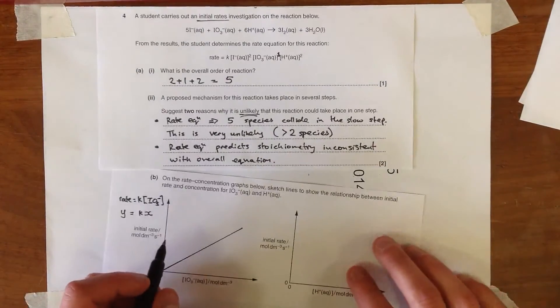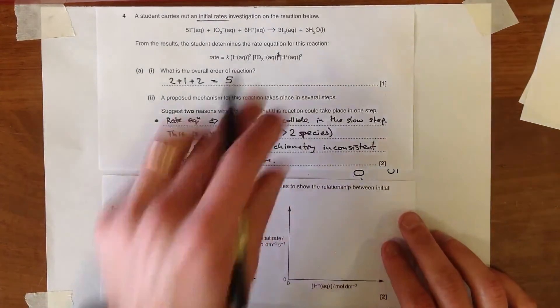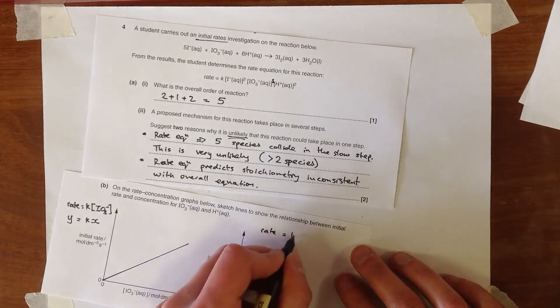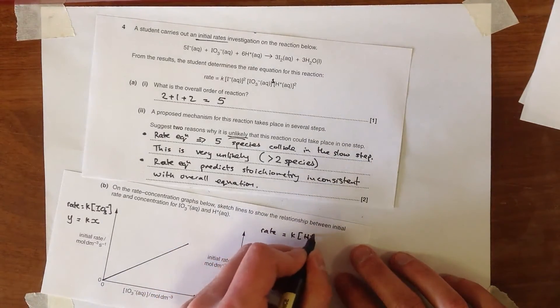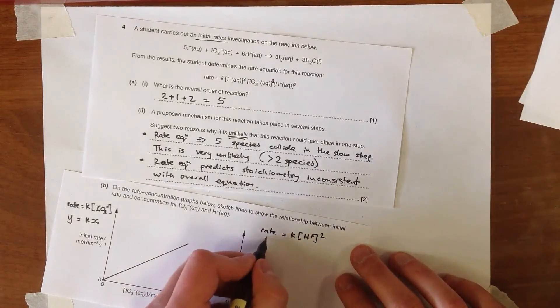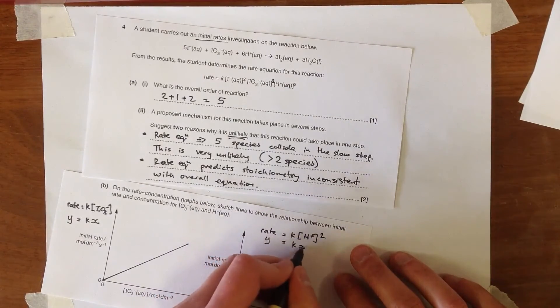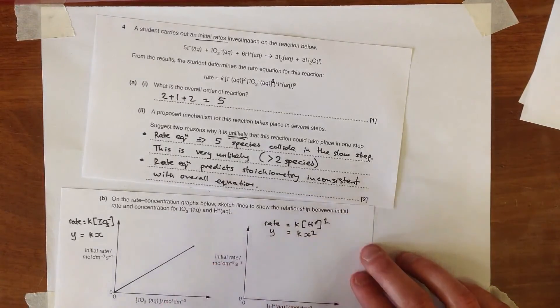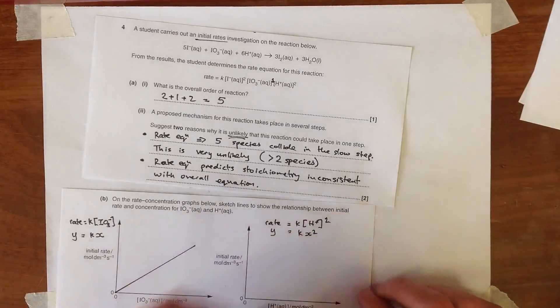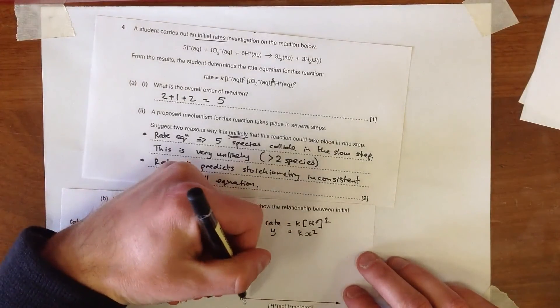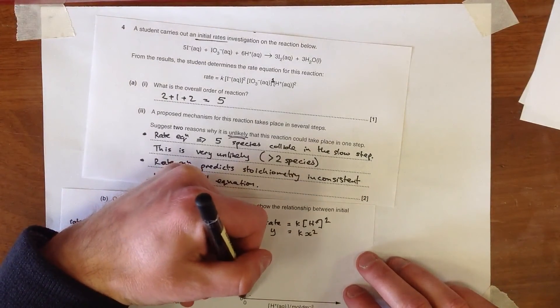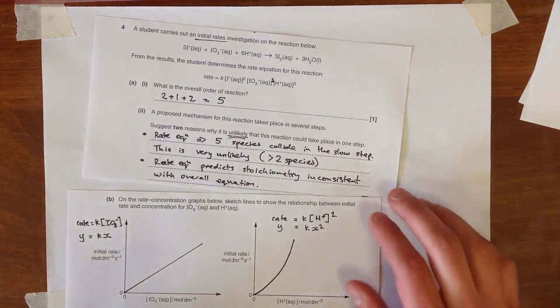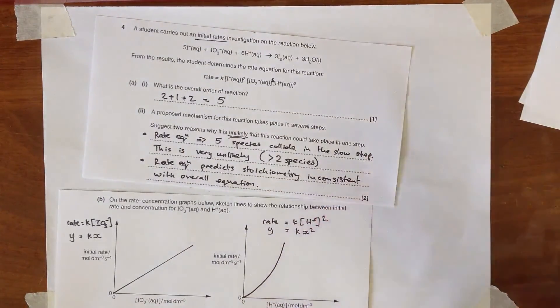Now the next one is the relationship for H plus. Now that's second order. So we're looking at rate equals K times H plus squared which is looking something like Y equals KX squared. And so again we start if X is zero, Y will be zero here. And this time it's going to follow a square type relationship. So it would be having a constantly increasing gradient. So something like that would do.